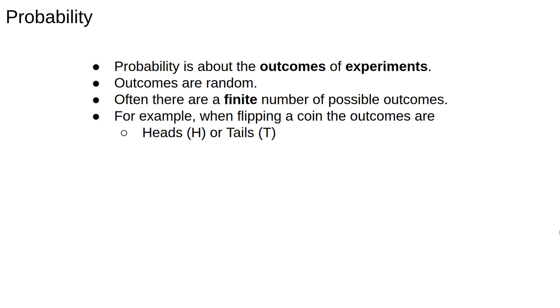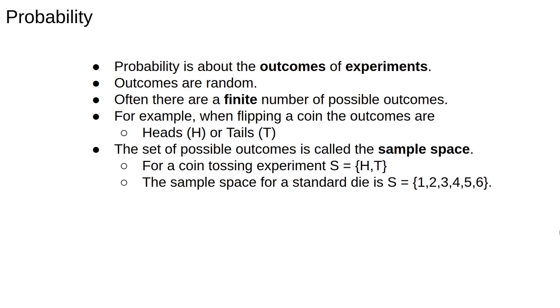The classic example is flipping a coin. The possible outcomes are heads or tails. The set of all possible outcomes is called the sample space. It's usually denoted by the set notation of listing all of the possible outcomes inside of curly braces. For the coin flipping case, we have a set S with two elements, heads and tails. Another classic example in probability theory is rolling a standard die, in which case the sample space is the set containing the numbers 1, 2, 3, 4, 5, and 6.